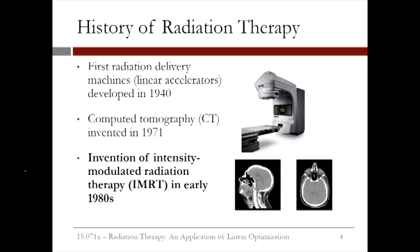Later in the 1900s, the first radiation delivery machines, called linear accelerators, were developed. Then, computed tomography, or CT scans, were invented in 1971. These discoveries led to the invention of intensity modulated radiation therapy, or IMRT, in the early 1980s.